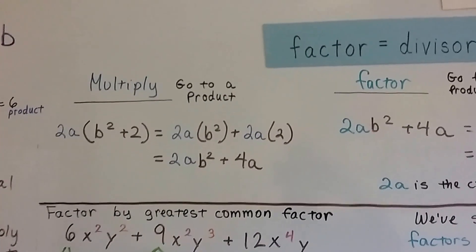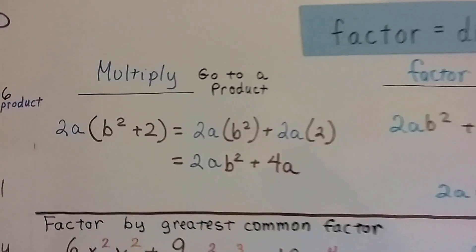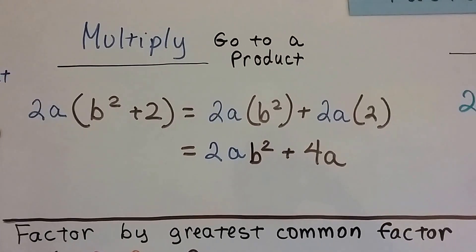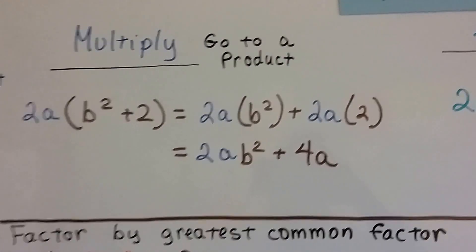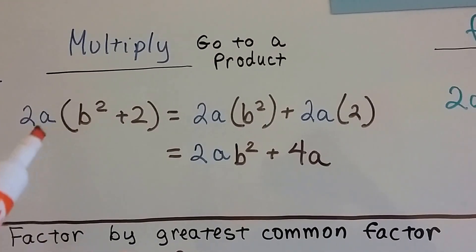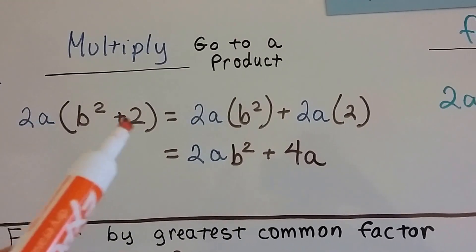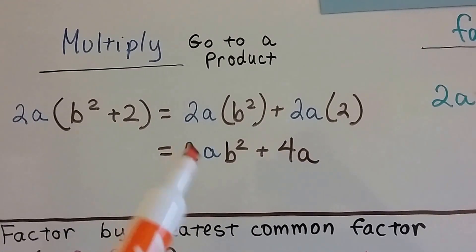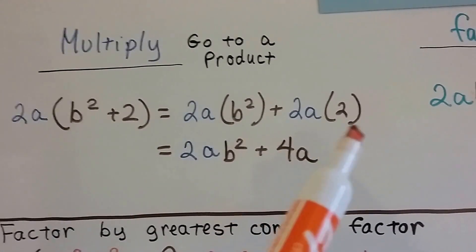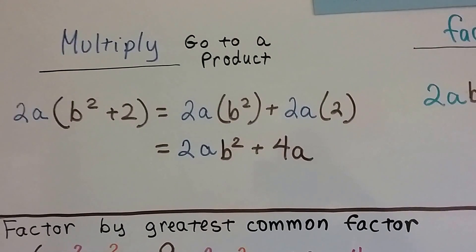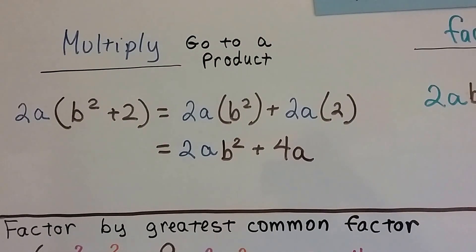So if we have 2ab squared plus 2, we know these are multiplied. We would use the distributive property, so it would be 2a times b squared, and then 2a times 2, and we'd get 2ab squared plus 4a.